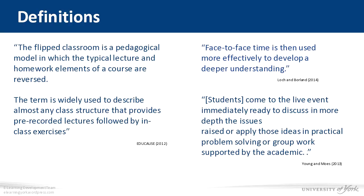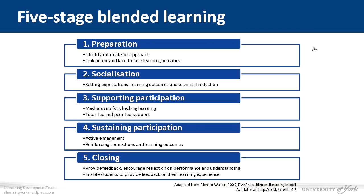What I'd like to look at as a framework for the flipped model is the five-stage blended learning model we have here at the university. The first stage is all about preparation, and you'll hear this time and again throughout the webinar — I'm asking you to think about what you actually want to achieve through this particular learning design. So here you identify your rationale for approach, but crucially you're linking the online and the face-to-face learning objectives. That's crucial in the flipped learning design — you don't want students doing something online that isn't then going to be drawn upon in the face-to-face session.